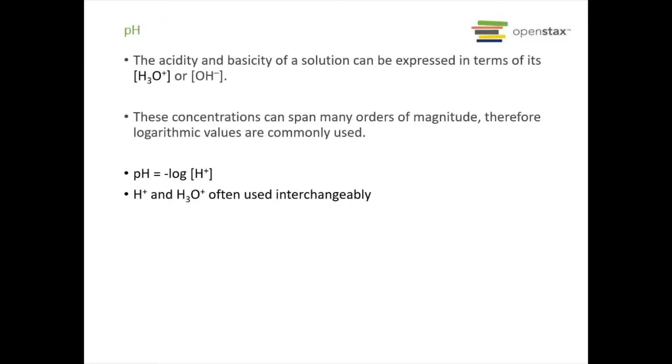And we can express how acidic or basic something is using what is called the pH scale or px. So the general thing is px equals the negative log of x. So pH equals the negative log of H+. And H+ and H3O are often used interchangeably. So when I was an undergrad and I was petty, I would always write H3O+ because I wanted to make sure. If that helps you, it's totally fine. H+ and H3O+ mean the same thing.